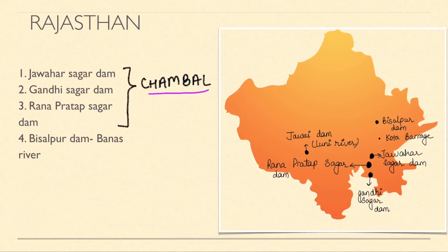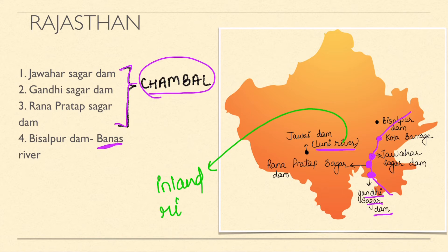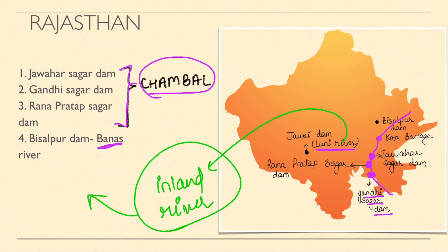In Rajasthan we will cover two important rivers: Chambal and Luni. On the Chambal, the main dams are Gandhi Sagar Dam, Rana Pratap Sagar Dam, and Kota Barrage - with Gandhi Sagar and Rana Pratap Sagar being very important. Kota Barrage is less important. Also, Jawai Dam is on the Luni River. Luni is India's inland river, originating in Rajasthan and disappearing into the Gujarat area.